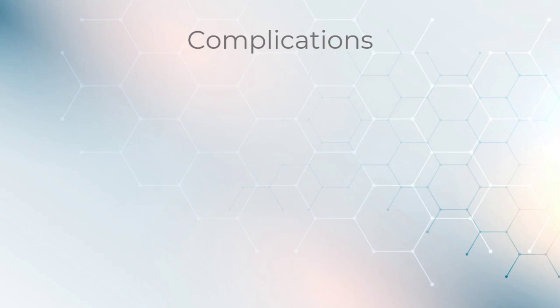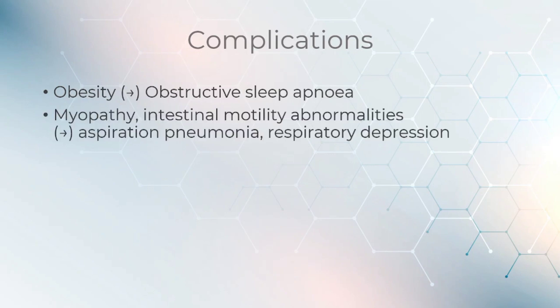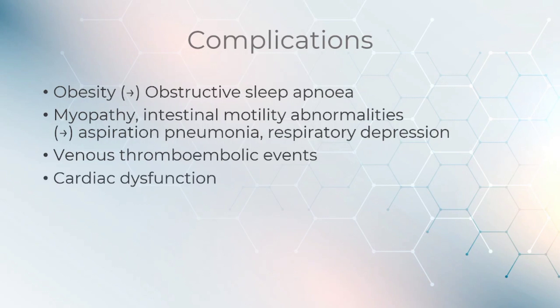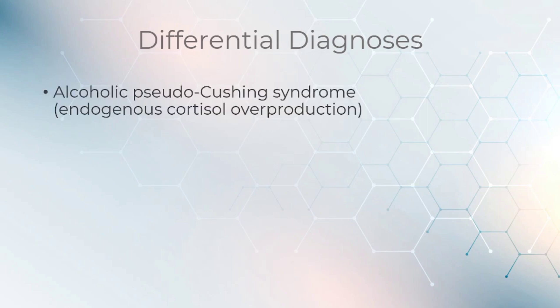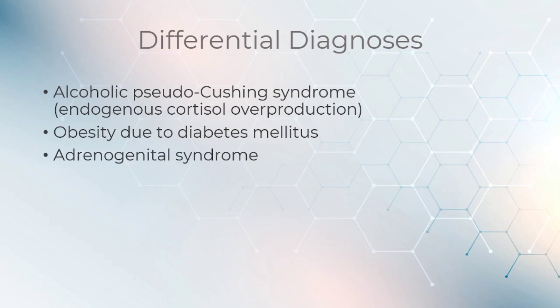Complications include obesity possibly causing obstructive sleep apnea, myopathy and intestinal motility abnormalities which may cause aspiration pneumonia and respiratory depression, venous thromboembolic events, and cardiac dysfunction. The differential diagnoses are alcoholic pseudo-Cushing syndrome, obesity due to diabetes mellitus, and adrenogenital syndrome.